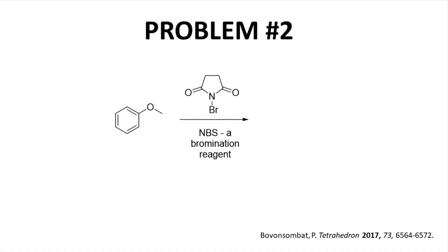Problem 2. This is a halogenation, a bromination. The starting material is anisole with a methoxy group on the ring. Methoxy is a strong electron-donating group, so we would expect the ortho or para product. Most likely the para product because of steric hindrance at the ortho positions. I will note that this reagent is a bit unusual. Normally, we see Br2 and FeBr3 in brominations.